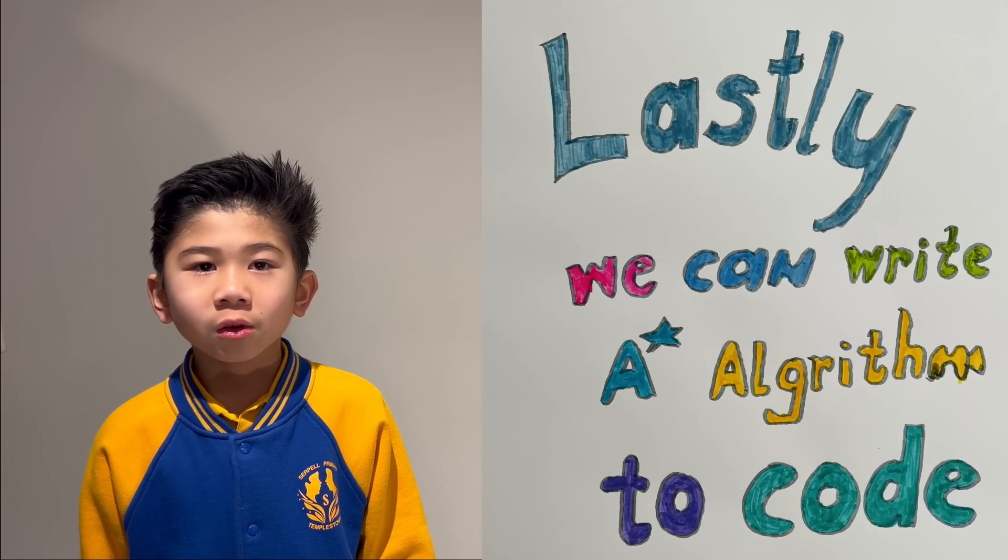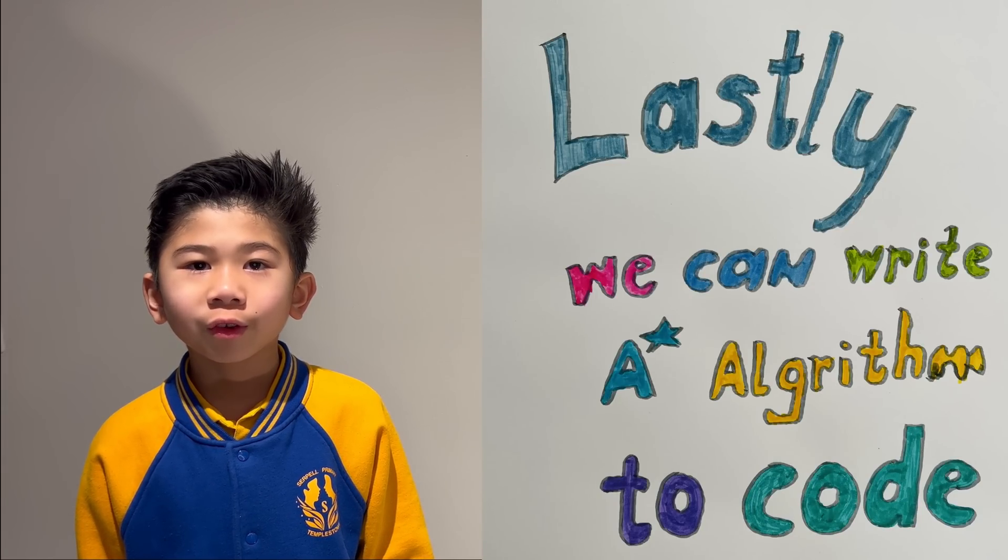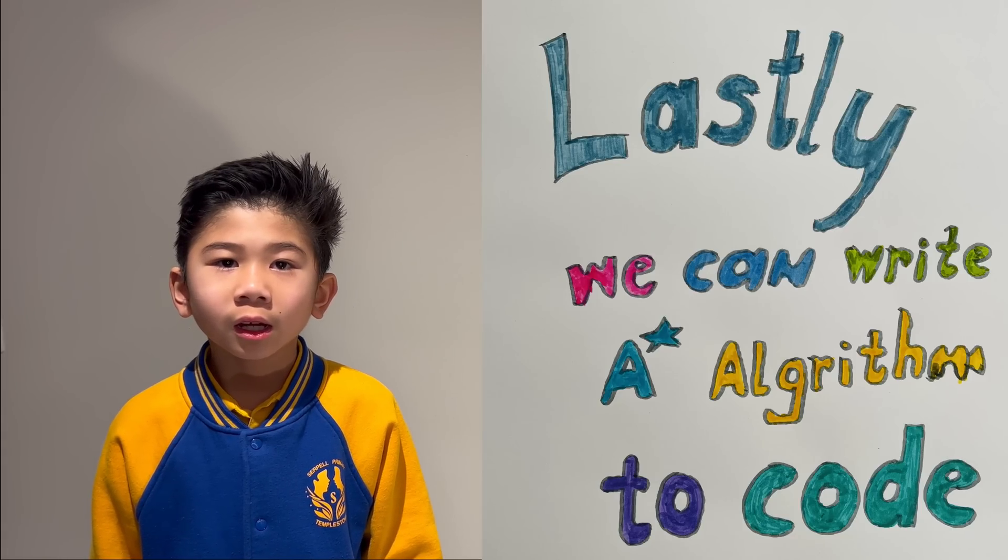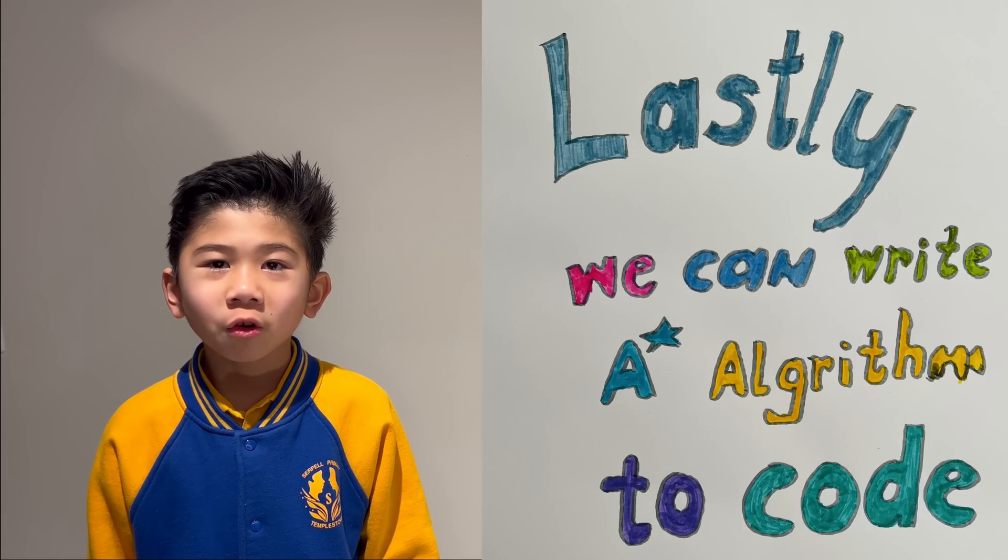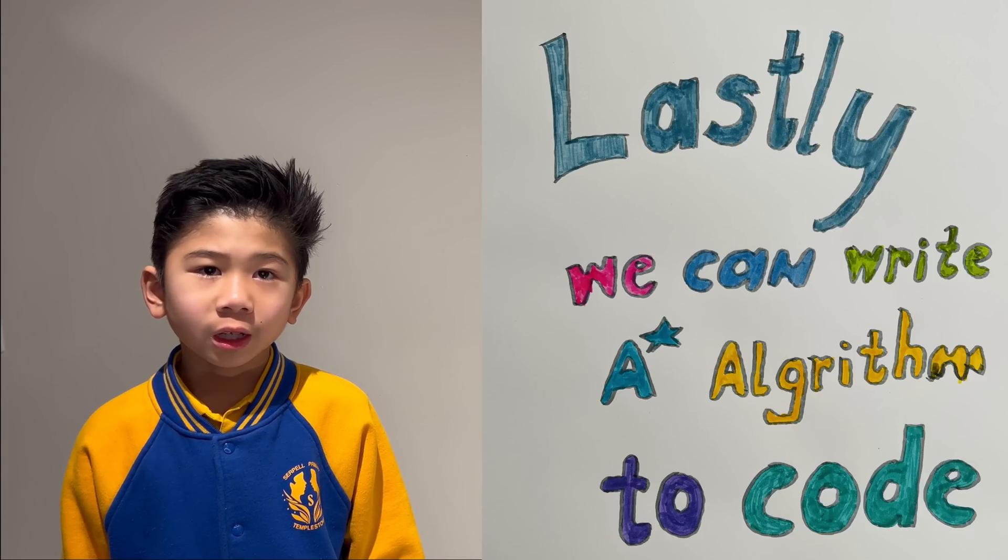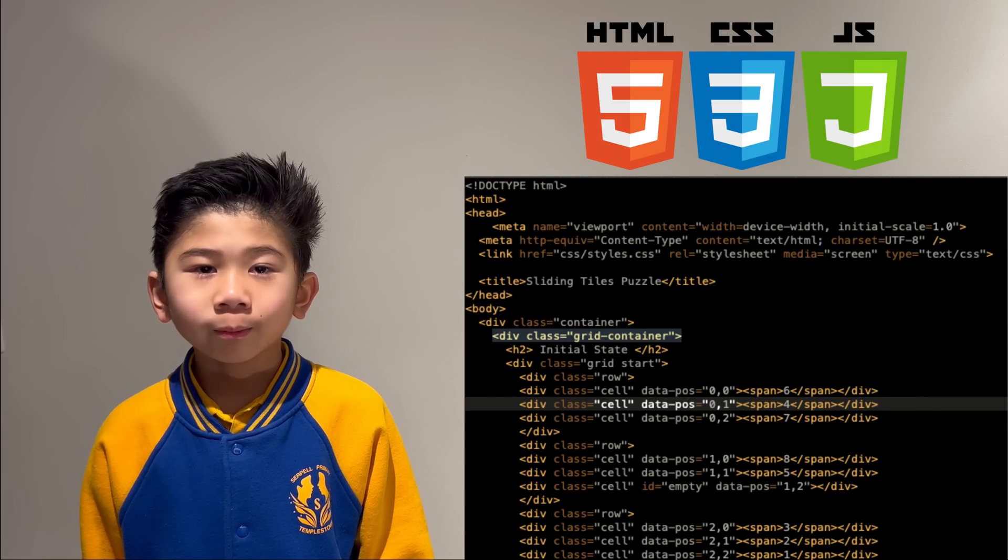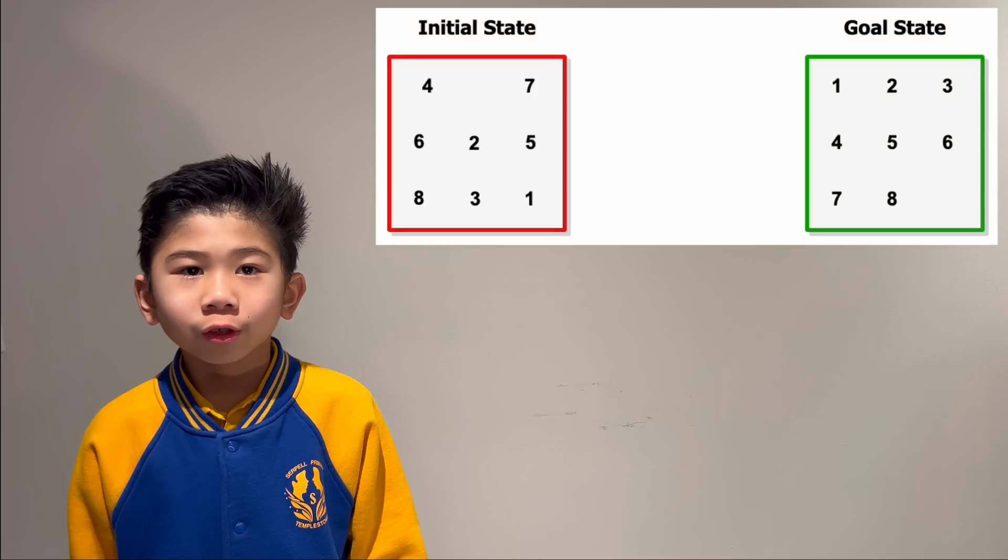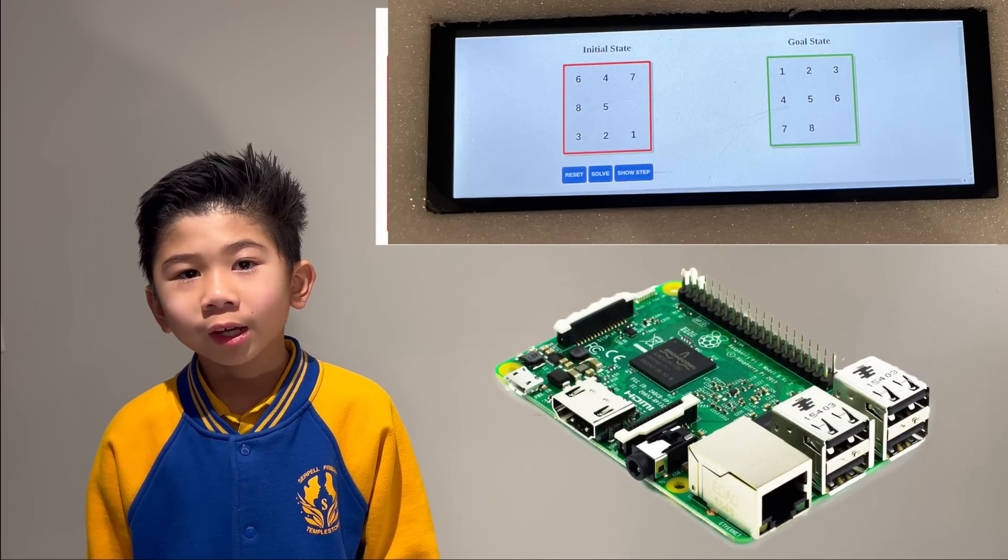Lastly, we can write A-star algorithm into code. We can convert the A-star algorithm into a programming language. In this case, HTML, JavaScript and CSS were used to create the example on the Raspberry Pi.